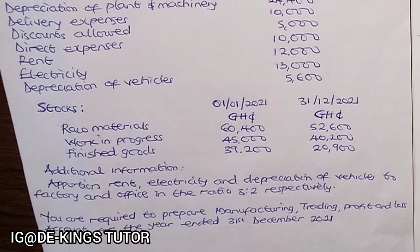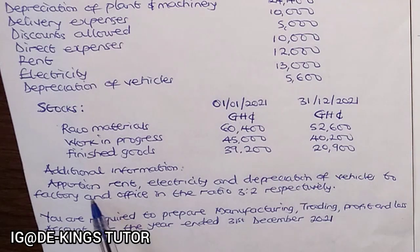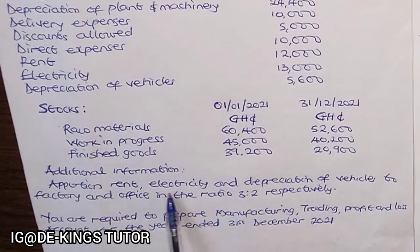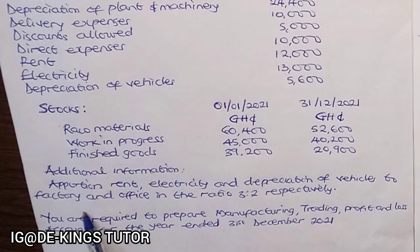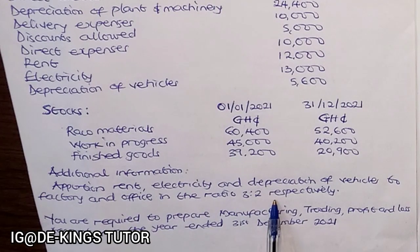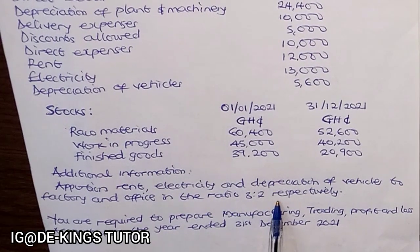You are required to prepare the manufacturing, trading, and profit and loss account for the year ended 31st December 2021. This question relates to the manufacturing account — we have done a full manufacturing account video on this channel, so check the playlist. Now the additional information says apportion rent, electricity, and depreciation of vehicles to factory and office in the ratio three to two.